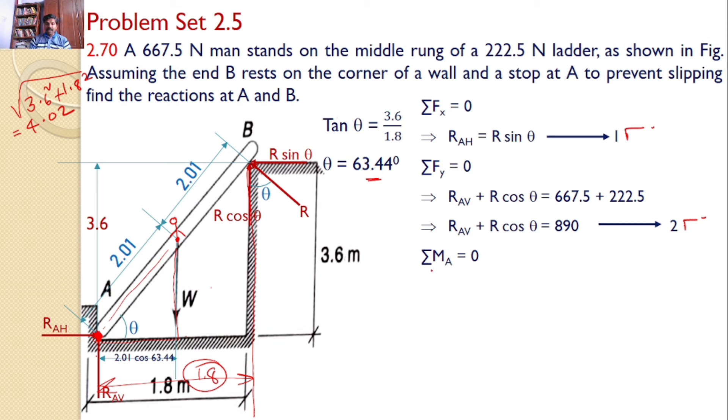I can apply the moment equation. Sigma MA equals 0. That is R sin theta times 3.6 plus R cos theta times 1.8. These two are in the counterclockwise direction, so they are positive. Minus the moment produced by the weight W: 890 times the perpendicular distance 2.01 times cos 63.44 equals 0.